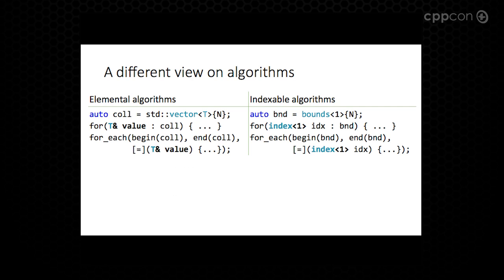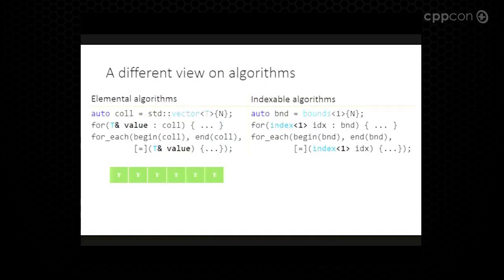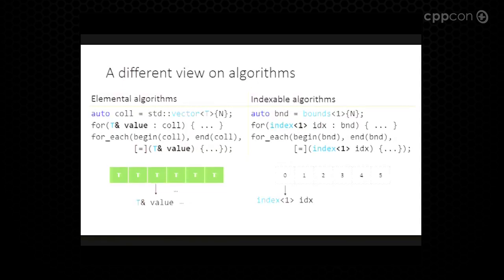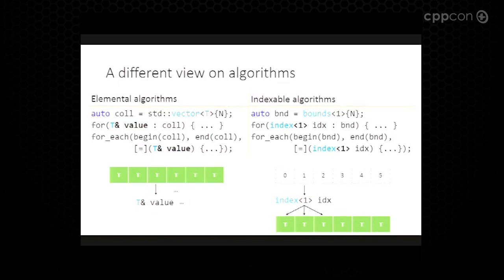What we really did is view the algorithm in a slightly different way. The traditional view — what we call elemental algorithms — has a sequence of objects, not necessarily contiguous, where we get a reference to the value of the first element, move the cursor to the second, get its value, and so on. In the indexable approach to algorithms, what we have is an abstract space of coordinates, where we get the first index — which will be (0,0) — move to the next element, and use this index to address a concrete data structure, either directly or with a local neighborhood, as in the example before.